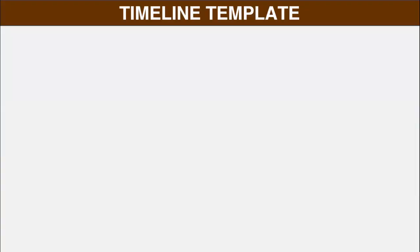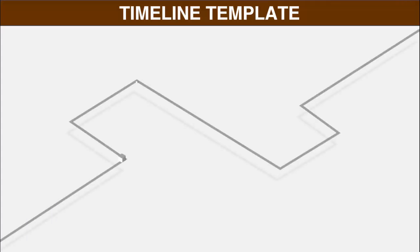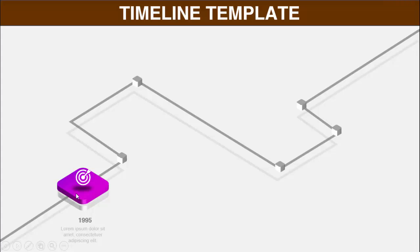In today's tutorial I'm going to show you how to create a six-step timeline template in PowerPoint. This is how the slide works — when I click, you can see I have created the path here with the shadow effect, and it looks like it is elevated from the ground. When I click the first option, the first item appears. I've used some gradient color with an icon and shadow effect, and you can add the year and detail text.